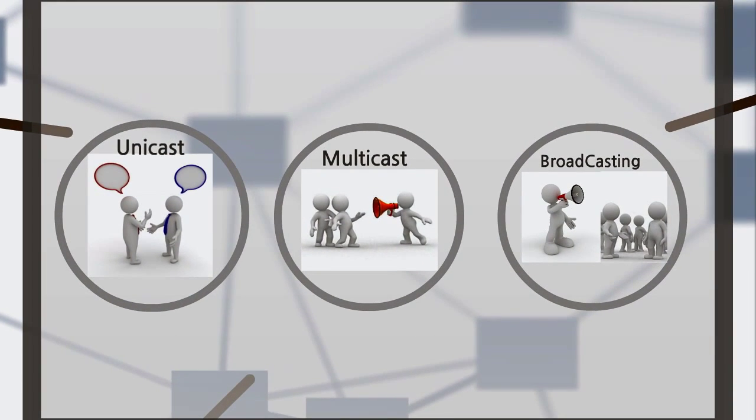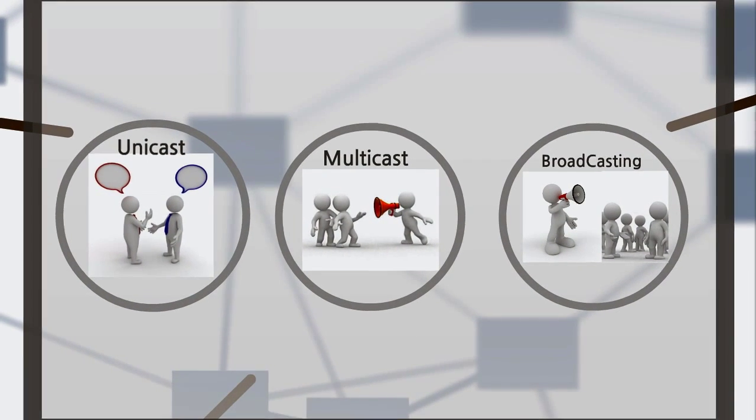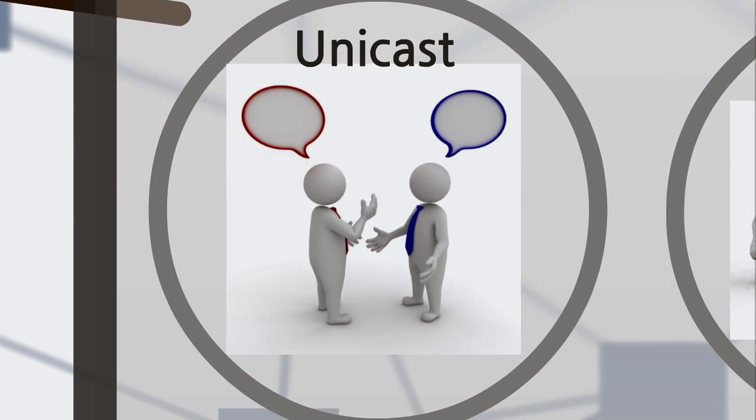In the unicast mode, one person can communicate to another person — one-on-one communication. In the case of network communication, it would refer to one device to another, like a computer to another computer or a computer to a printer, for example.